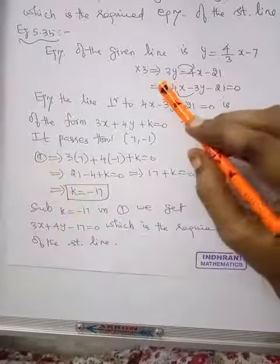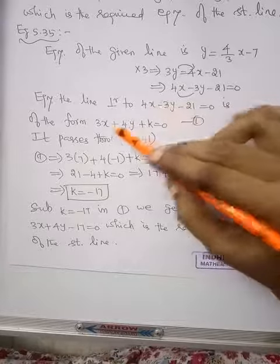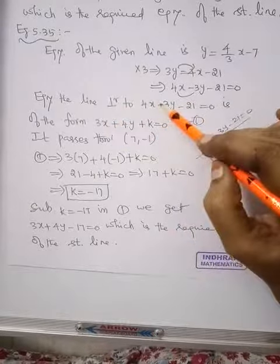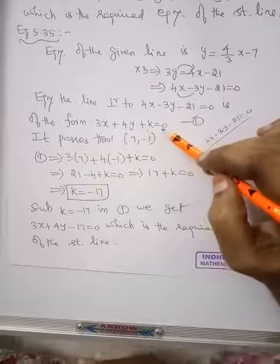Then this 3 comes here, 4 comes here. Change minus to plus, then 3x plus 4y plus constant k equal to 0.